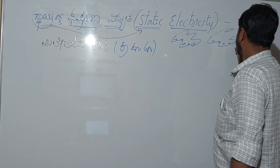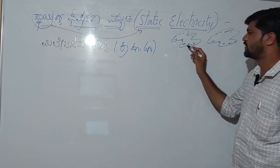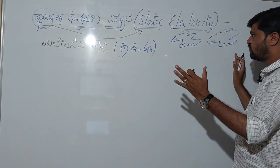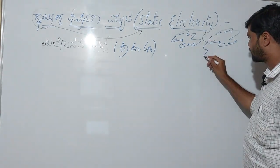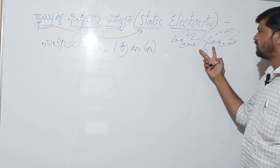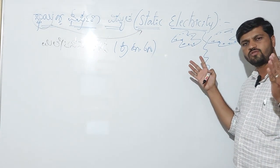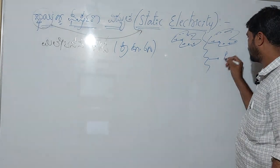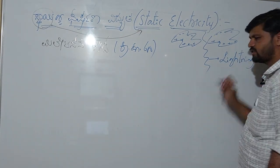Clouds also have charged particles. The friction between two unlike clouds produces electricity. We call it lightning.